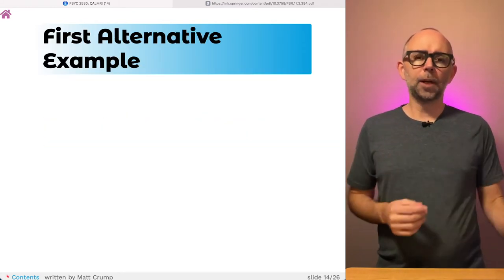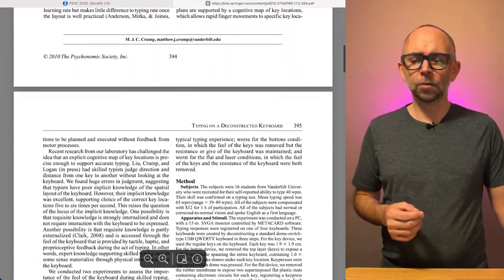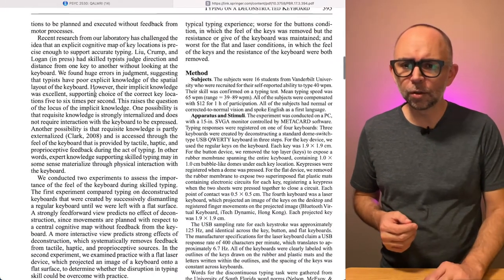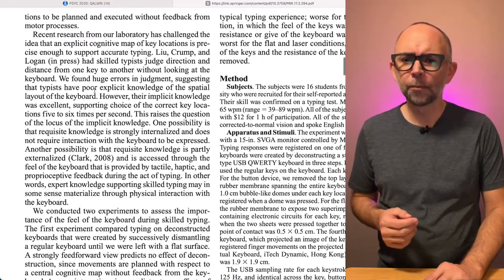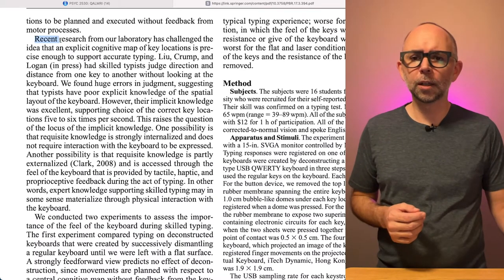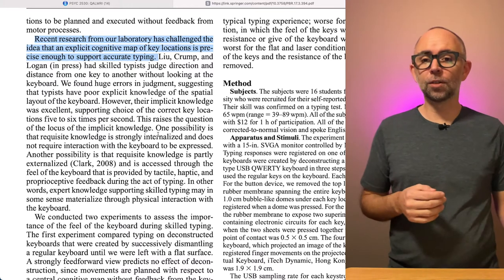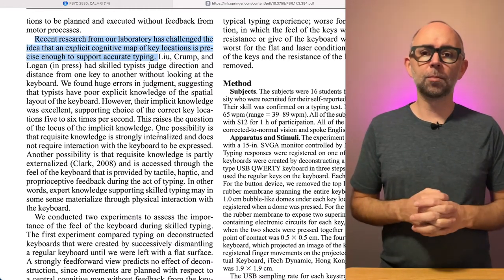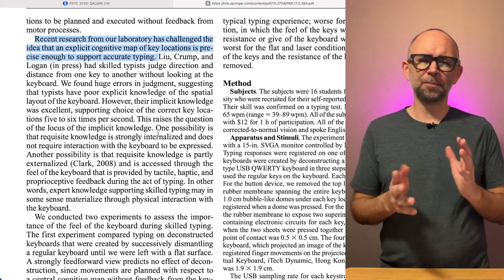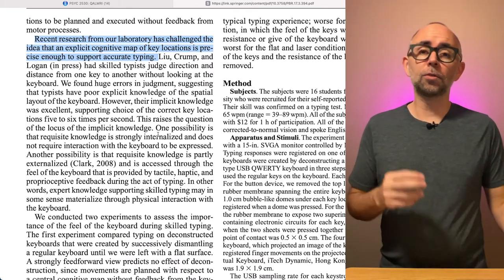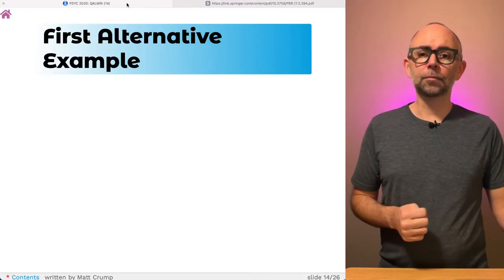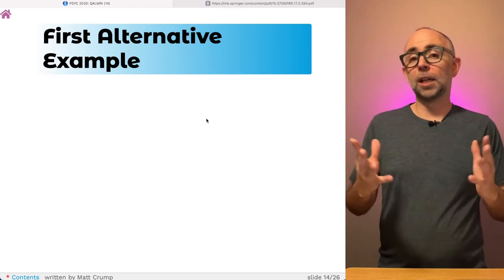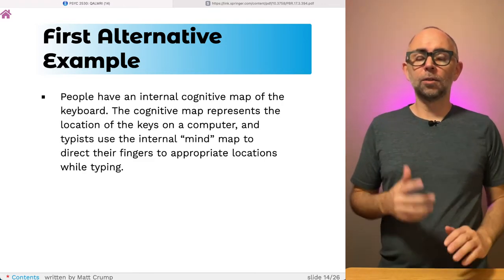So for example, in my paper, we can jump over here and sort of scroll down. And let's see if I can zoom in and highlight. Here's a sentence. Recent research from our laboratory has challenged the idea that an explicit cognitive map of key locations is precise enough to support accurate typing. So what does that mean? This sentence is alluding to one of the alternative explanations of typing ability. And I will try to extract that and rephrase it to have it make a little bit more sense.